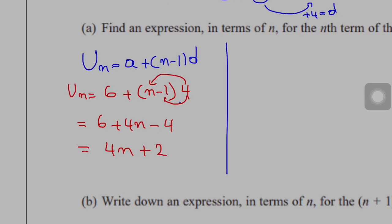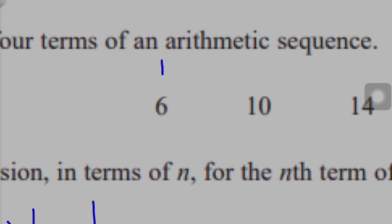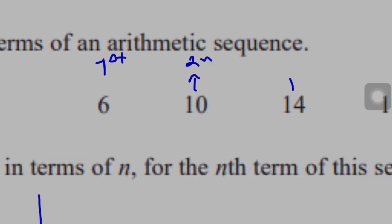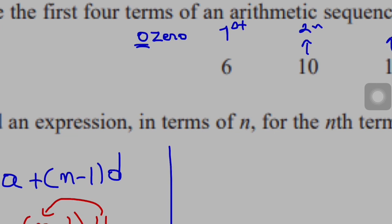Or we can use another method which is based on logic. I know that this is the first term, this is the second term, and this is the third term. I can get something called the zero term. What's the zero term? I know that each time I add 4, so if I subtract 4, I'll get the zero term, which is 2.